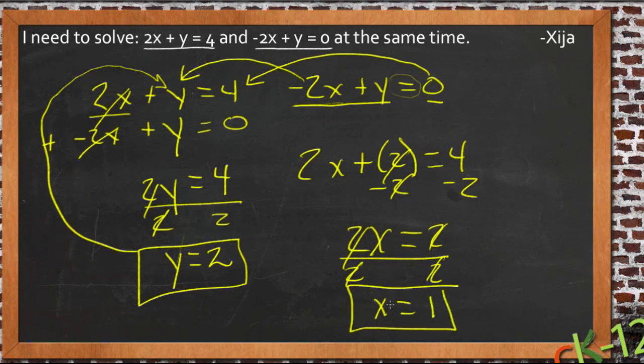So y equals 2 and x equals 1 solves both of these equations. We can check that out by looking here. 2 times 1 is 2, plus 2 equals 4. And negative 2 times 1 is negative 2, plus 2 is 0. So x equals 1 and y equals 2 solves both equations at the same time.